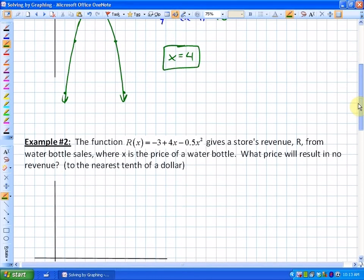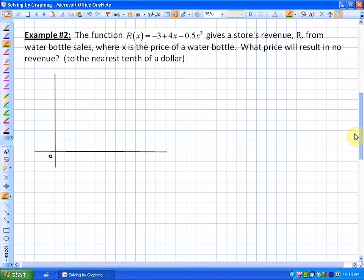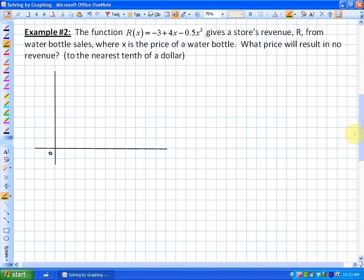Let's move on to a second example. In this particular example, what we're doing is looking at a word problem. It says the function rx is equal to negative 3 plus 4x minus 1 half x squared. That gives the store's revenue r from water bottle sales, where x is the price of a water bottle. What price will result in no revenue? So in this case, the keyword here being no revenue suggests that the revenue is equal to zero. If I substitute this into the formula for revenue, we are left with zero is equal to negative 3 plus 4x minus 1 half x squared.